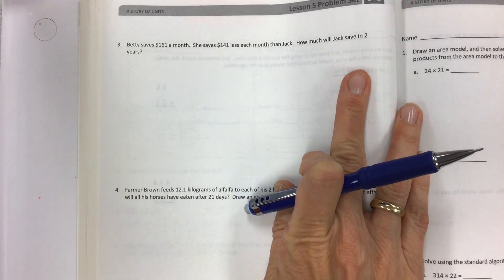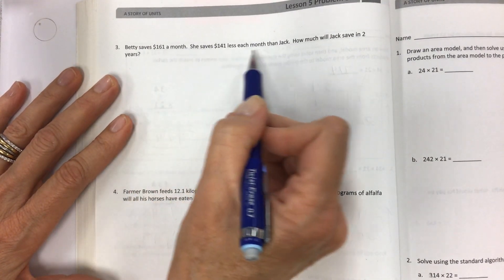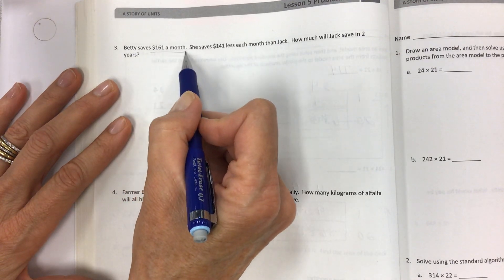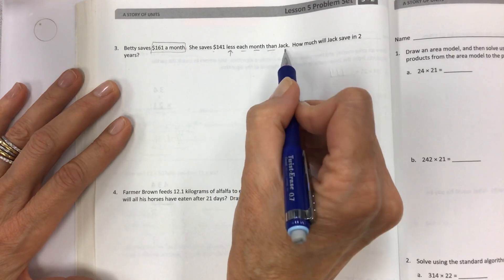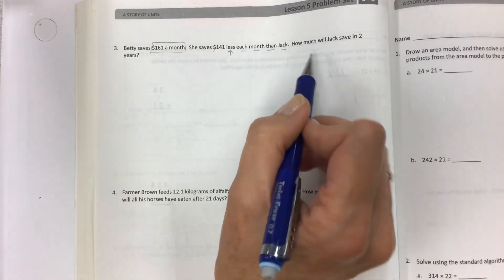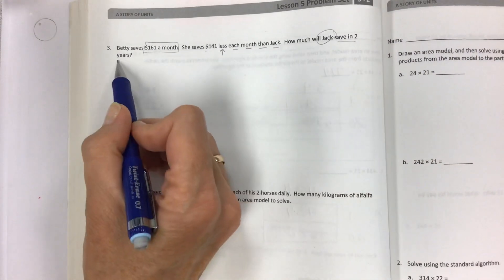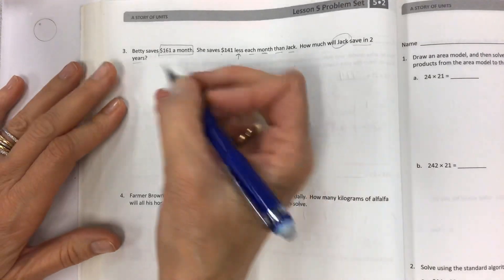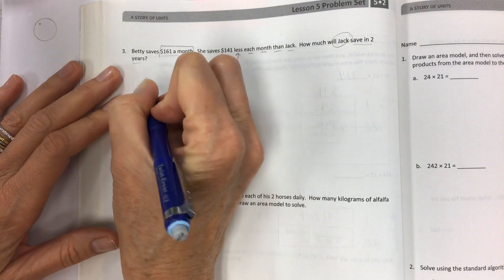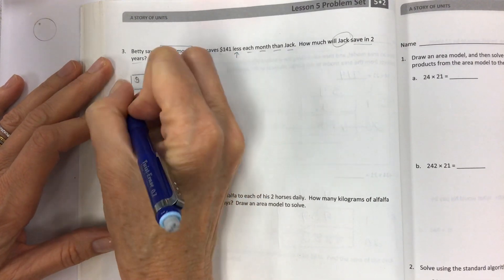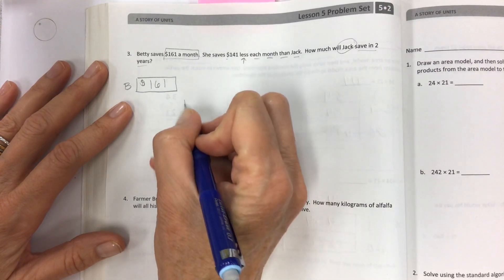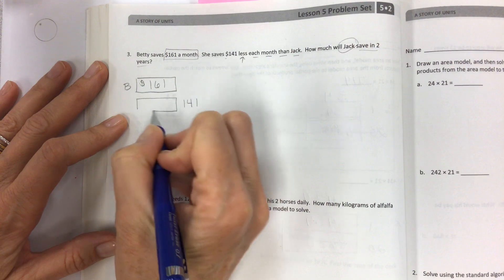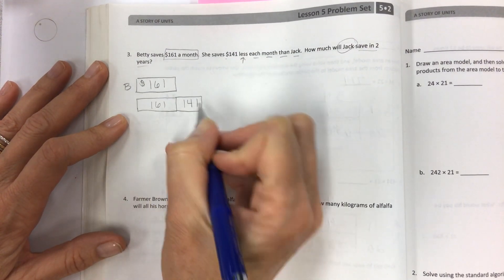So read carefully is my key for you. Circle and identify any important numbers. Betty saves 161 dollars a month. She saves 141 dollars less each month than Jack. How much will Jack save in two years? Holy moly, we've got months, we've got years, we've got Betty's amount, we've got Jack's amount. Let's make tape diagrams to help us sort out the difference here. Betty saves 161 dollars a month, but she saves 141 less than Jack.